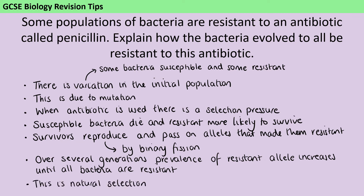Normally at this point I'd highlight which aspects of this answer you can miss out and still get six marks, but to be honest there isn't really much here that you can miss out. That first line about variation maybe doesn't need to be stated explicitly, because by describing susceptible and resistant bacteria you have explained that there's variation — although it is always good to use that keyword. Likewise, describing susceptible bacteria dying and resistant ones surviving does sort of imply the selection pressure, as long as you've said that happens when the penicillin is used. And you probably don't need to say they're reproducing by binary fission. But apart from that, you really do need all of the other parts of this answer to get the six marks.